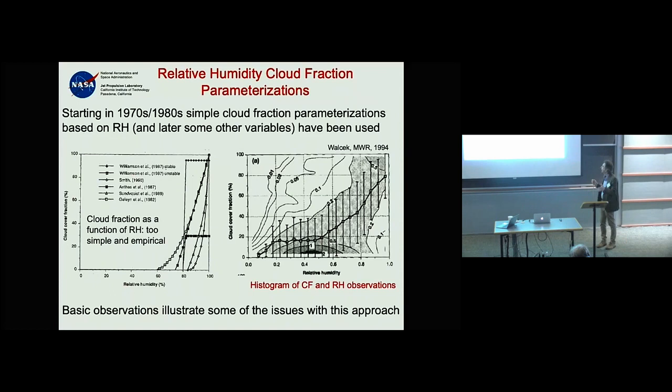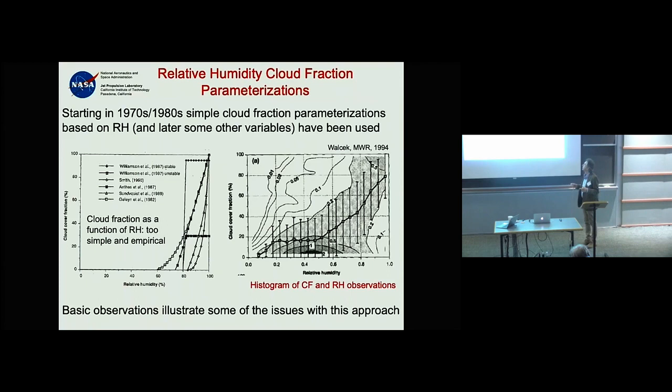The first climate modeling work by Manabe and others — who by the way won the Nobel Prize about a year ago — simply imposed the clouds. They said: I don't know how to calculate clouds, I'm going to impose them. Results were nice, but they still imposed the clouds.